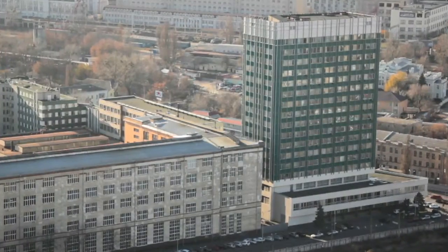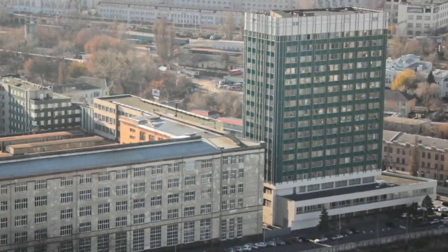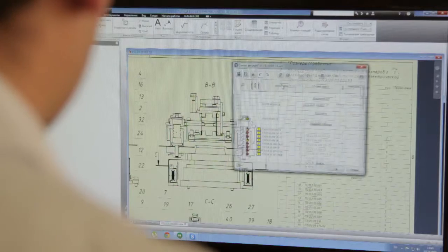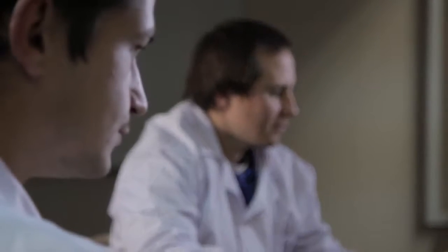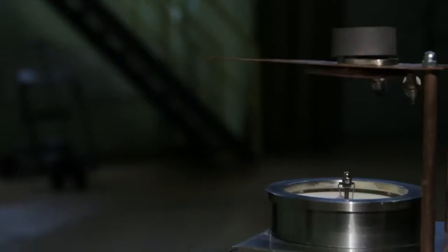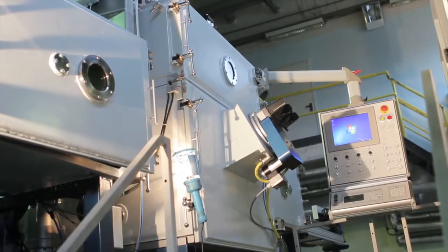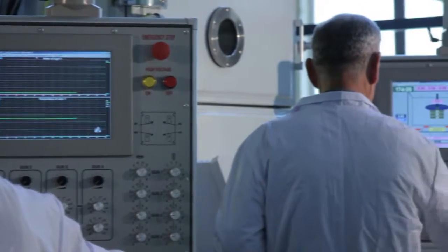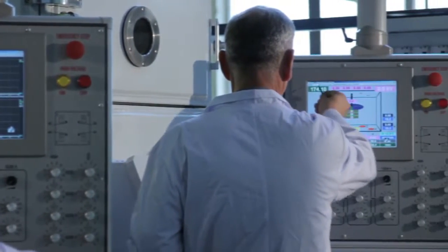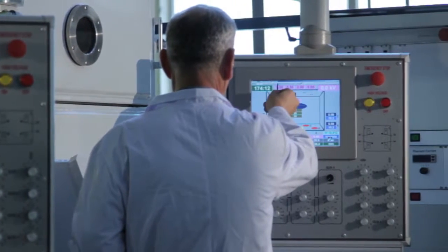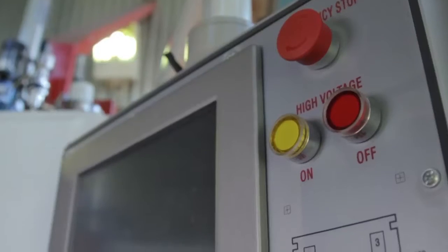For decades, the Paton Institute and its International Electron Beam Technology Center have been developing and producing electron beam equipment, from miniature devices for laboratories to extra-size industrial installations, like the high-tech vacuum system comprising electron beam guns, a high-voltage power supply unit, and a control system. Few countries are able to produce such sophisticated equipment.